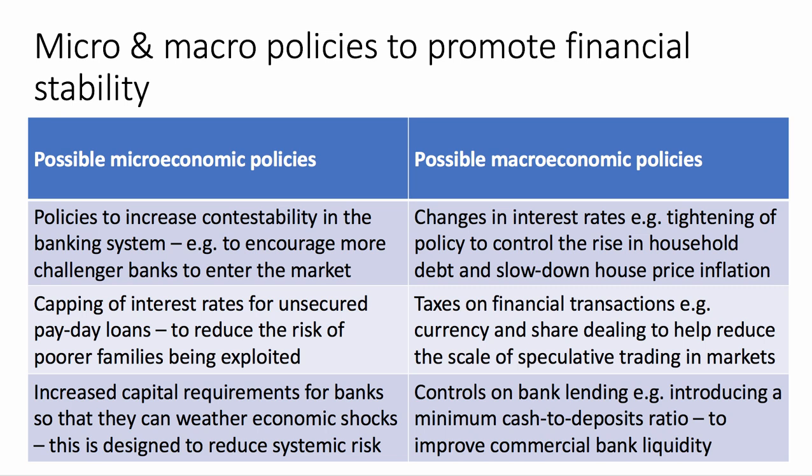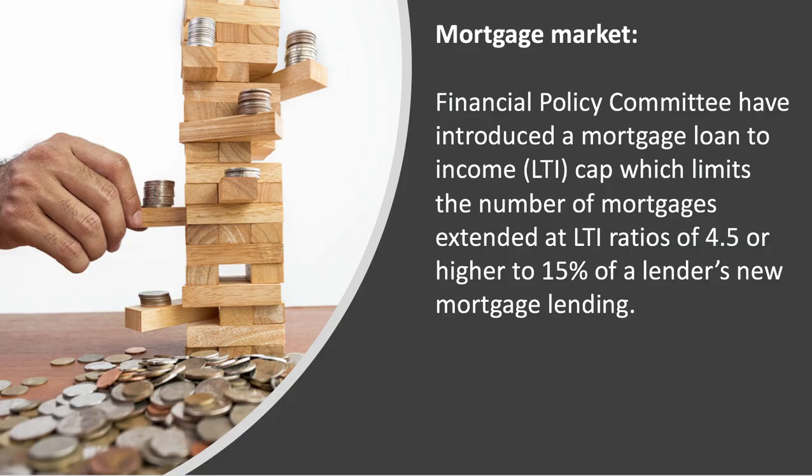You could also have an economy-wide control on bank lending. A macro policy would be to introduce a minimum cash-to-deposits ratio for the banking system, designed to increase their liquidity. A good example is in the mortgage market, where the UK's Financial Policy Committee — the FPC — have brought in a mortgage loan-to-income cap, which limits the number of mortgages where they're lending four and a half times or higher of people's incomes.